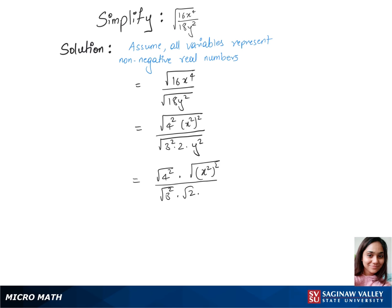In our next step, the square and square root get cancelled. So we have 4 times—here it's a variable so we'll put that under the modulus—so modulus of x square, over 3 times root 2 times modulus of y.